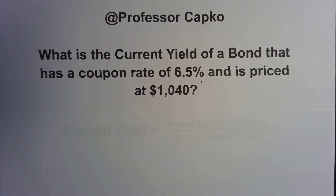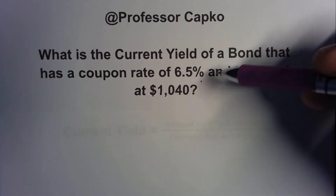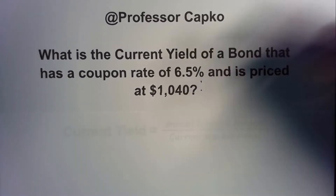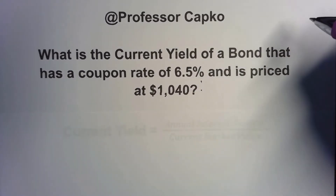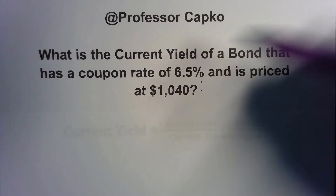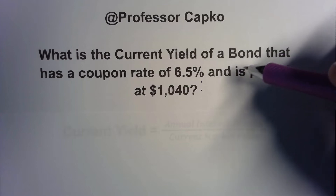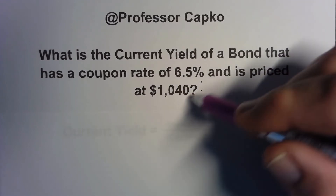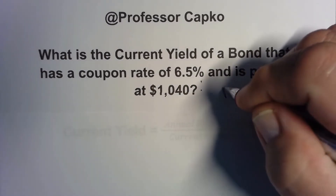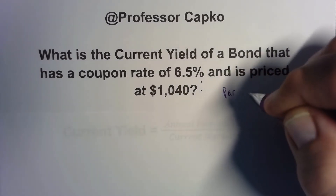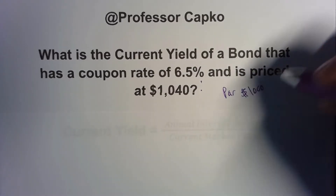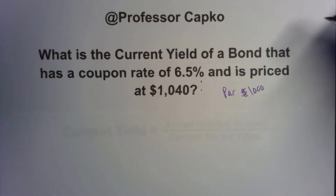Current yield is what interest rate you are earning if you bought this bond today at $1,040 — that's the price it's trading at. Because it's in this range, we're going to presume that its par or face value is $1,000.